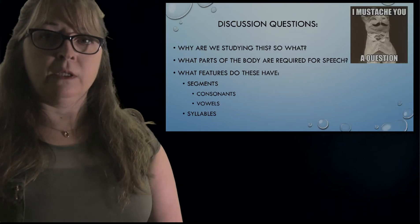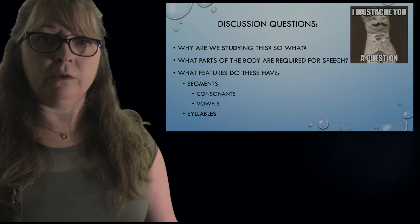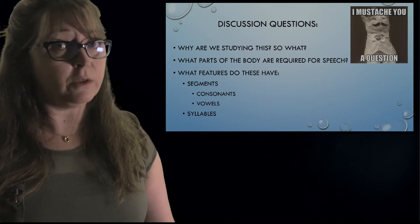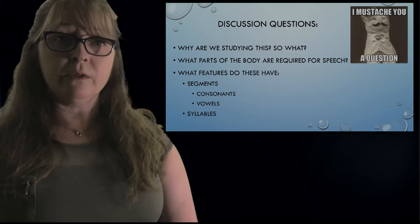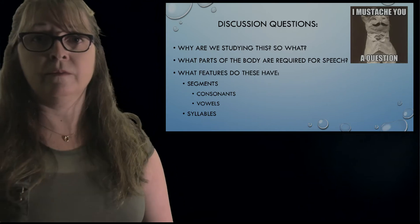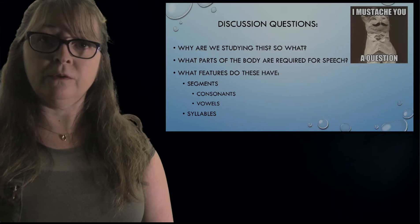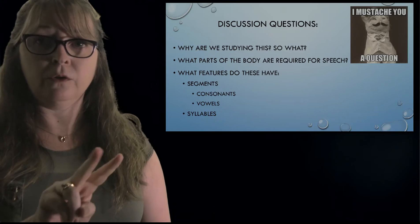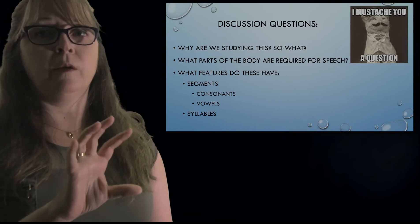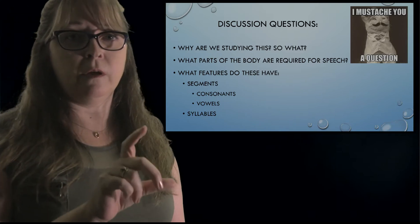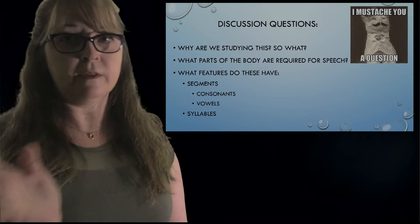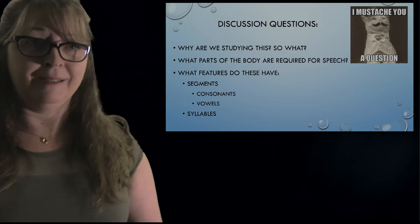Let's look at what we're going to discuss today. Why are we studying this? That's my favorite question. What parts of the body are required to produce sounds? What features do these have? There are two main types: segments and syllables. We're going to do most of our focus on segments, which are consonants and vowels.